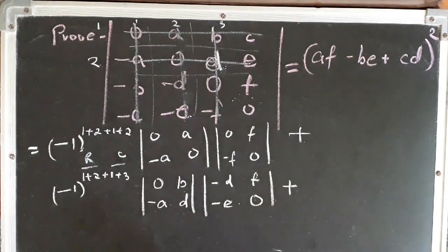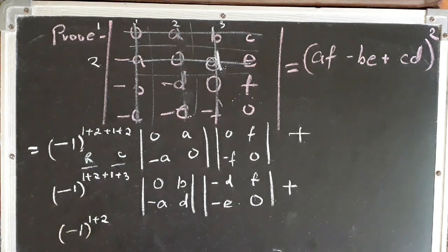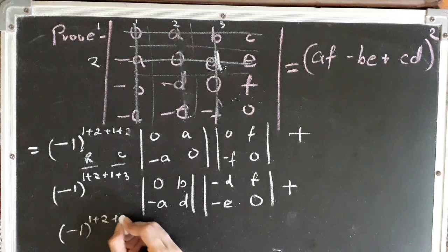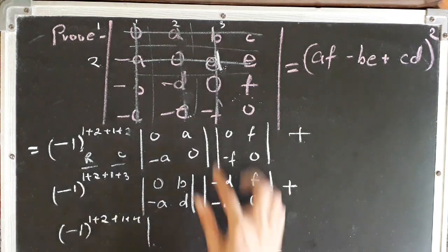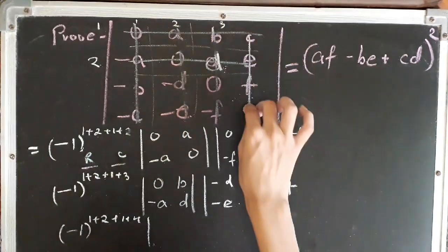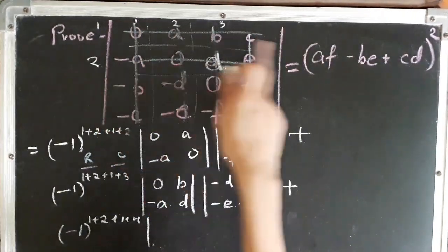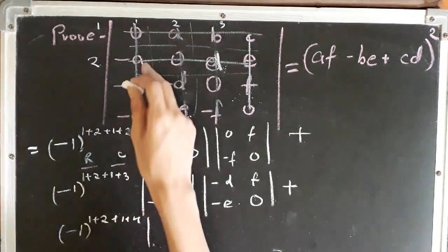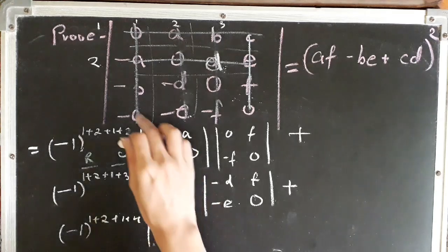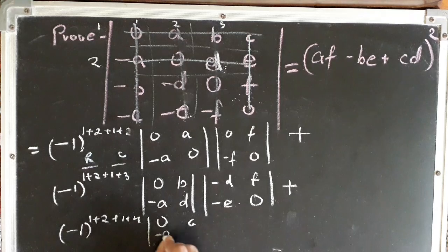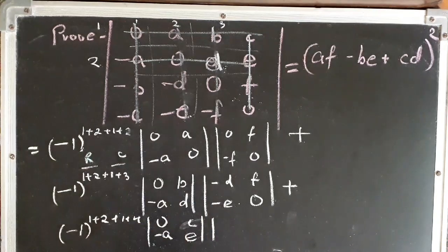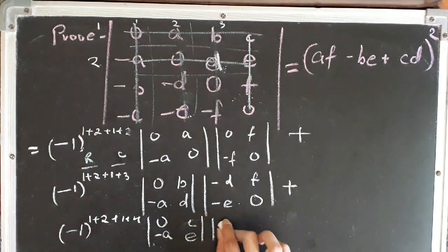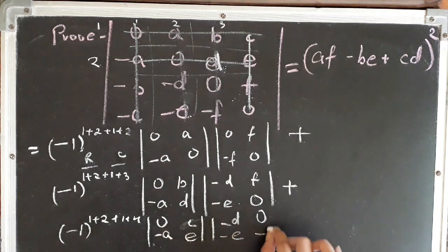Again with a plus sign: rows remain the first and second. Now I choose the first and fourth columns, writing 1 plus 4. The common points in the first and fourth columns and first and second rows are 0, C, minus A, and E. The uncommon points are minus D, 0, minus E, and minus F.